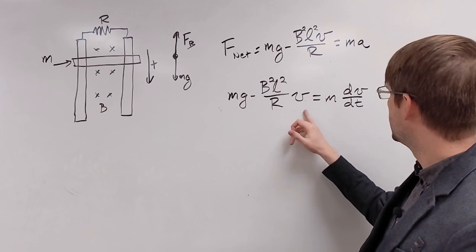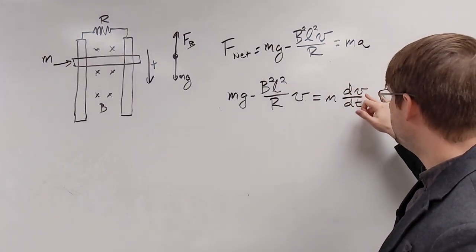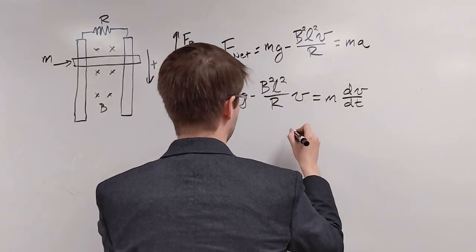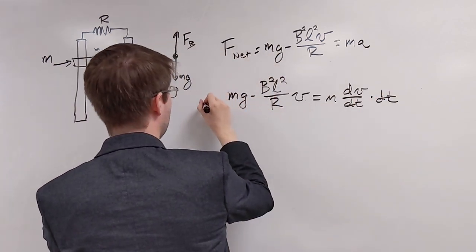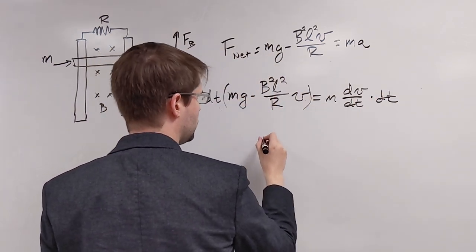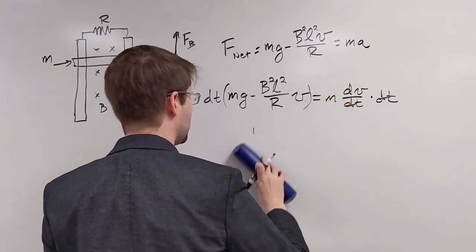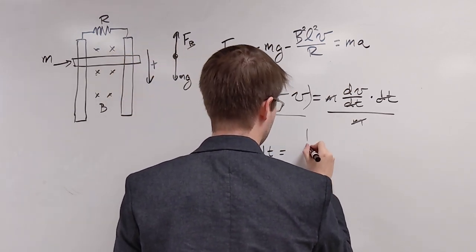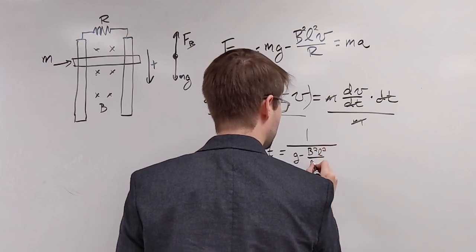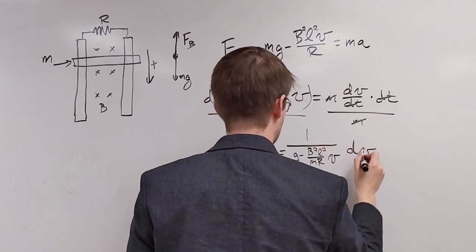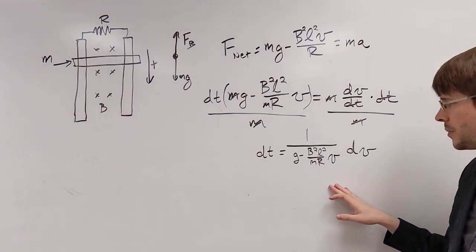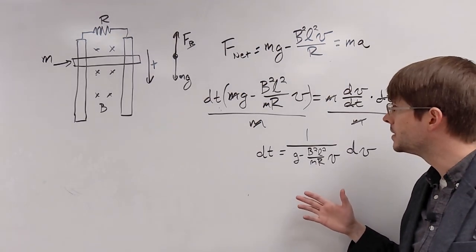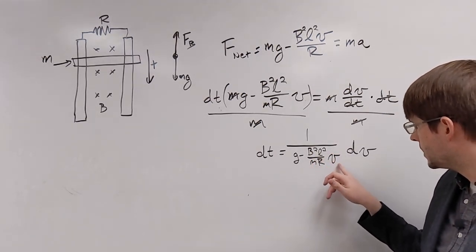First thing we want to do is a little bit of separation of variables. So we're going to get all the dv terms on this side, bring the dt over to the other side and try to solve it that way to start off with. All right. So now I've appropriately separated my variables. I've got everything that depends on time on the left, which nothing in here directly looks like it does. And then on the right, I've got everything that depends on the velocity. And it looks like this.